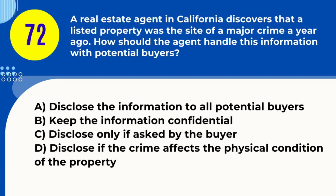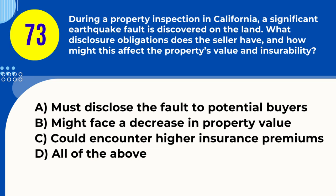Question 72. A real estate agent in California discovers that a listed property was the site of a major crime a year ago. How should the agent handle this information with potential buyers? A. Disclose the information to all potential buyers B. Keep the information confidential C. Disclose only if asked by the buyer D. Disclose if the crime affects the physical condition of the property. Answer: A. Disclose the information to all potential buyers. Explanation: California law requires the disclosure of a major crime on the property to all potential buyers.